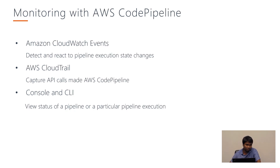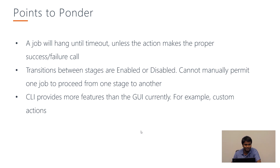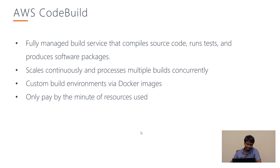For AWS CodePipeline monitoring, we can use Amazon CloudWatch Events, AWS CloudTrail, and monitor the pipeline using the console and CLI. Some additional points: a job will hang until timeout unless we specify if it has failed or not. Transitions between stages are currently done through the pipeline itself — we can't manually make a stage pass and jump to another. The CLI provides more features than the GUI currently; for example, setting custom actions can only be done using the CLI. That's it about CodePipeline.